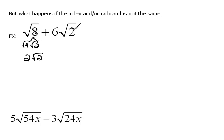Now, this 6 square roots of 2 is fully simplified because we can't do anything with a 2 underneath a radical. So now we're looking at 2 square roots of 2 plus 6 square roots of 2.